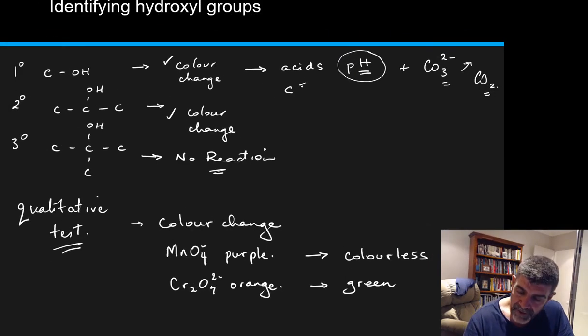The key functional group here is a carbon double bonded to an oxygen, and then single bonded to another oxygen which is bonded to a hydrogen. This is our carboxylic acid functional group, and it's what happens when we oxidize a primary alcohol.